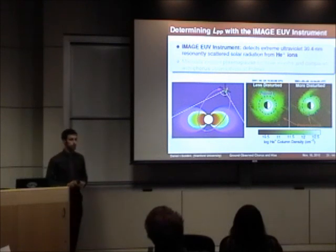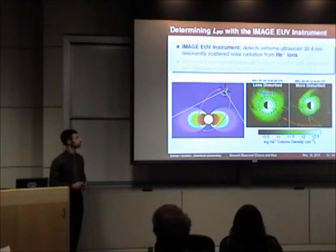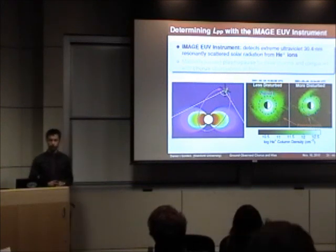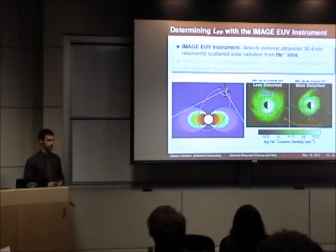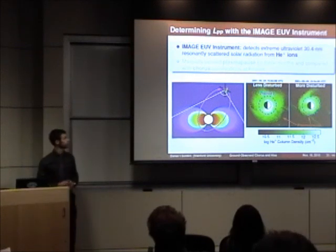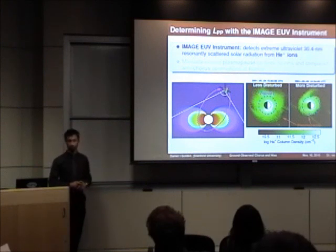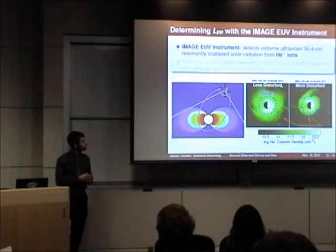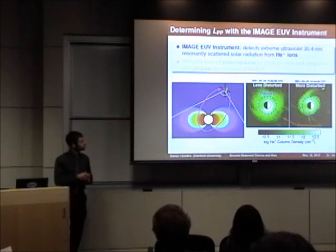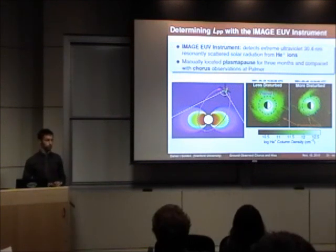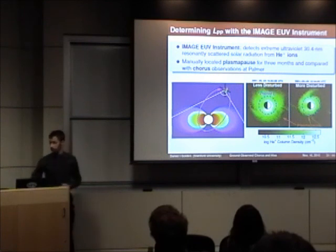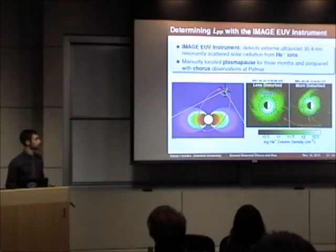To measure the instantaneous plasmapause extent, we use the EUV — extreme ultraviolet — instrument on board the IMAGE satellite. The EUV instrument detects extreme ultraviolet radiation resonantly scattered by solar radiation from helium ions, which are a constituent of the plasma sphere. Two example images from the EUV instrument are shown: one showing a less disturbed case with a more filled-in plasma sphere, and one showing a more disturbed case where the plasma sphere is more eroded. For this study, we manually located the plasmapause in EUV data for three months and compared it with observations of chorus at Palmer Station, to get a feel for how chorus observations depend on plasmapause extent.